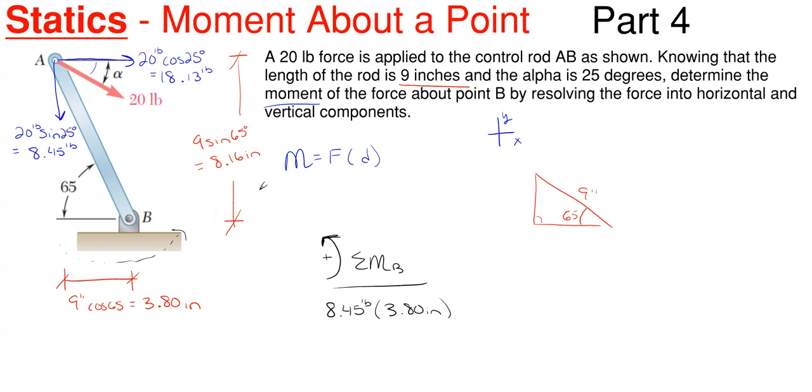And then we would have our 18.13. This one will be coming down and it will be swinging clockwise about point B. So that would be negative based upon my sign convention, so minus 18.13 pounds. Since it is a horizontal force, I need a vertical dimension, and that vertical dimension to get it down to B would be 8.16 inches.